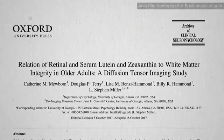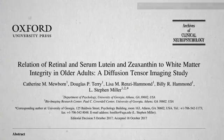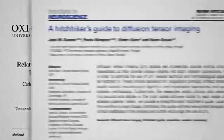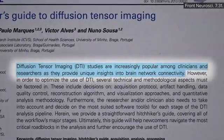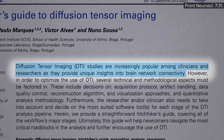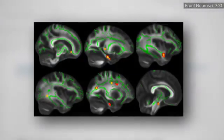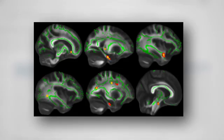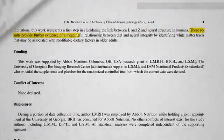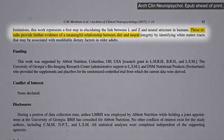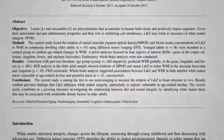Check out this cool study on white matter integrity using diffusion tensor imaging, which provides unique insights into brain network connectivity, allowing you to follow the nerve tracks throughout the brain. Researchers were able to show enhanced circuit integrity based on how much lutein and zeaxanthin they could see in people's eyes — further evidence of a meaningful relationship between diet and integrity of our brains, particularly in regions vulnerable to age-related decline.